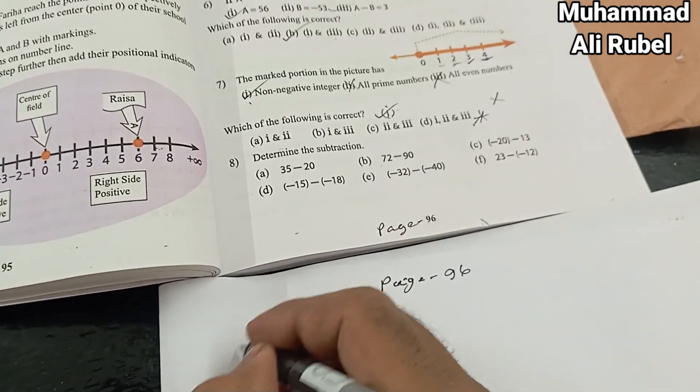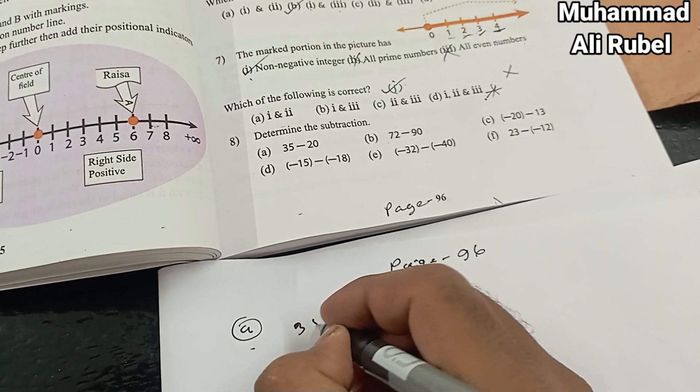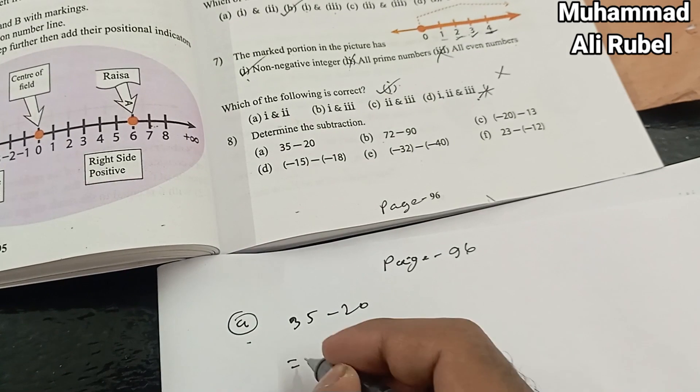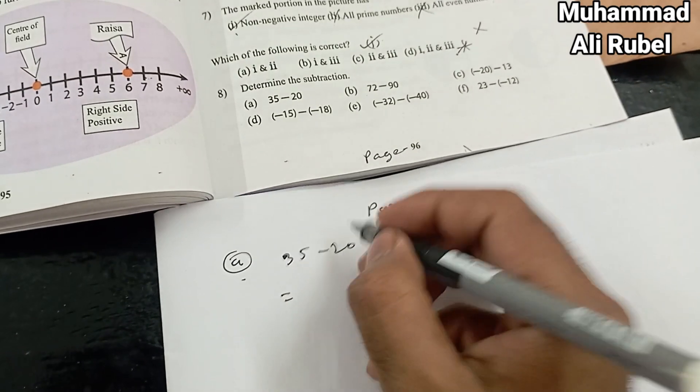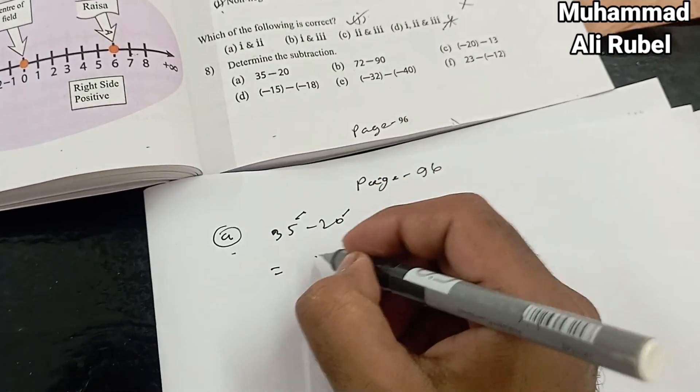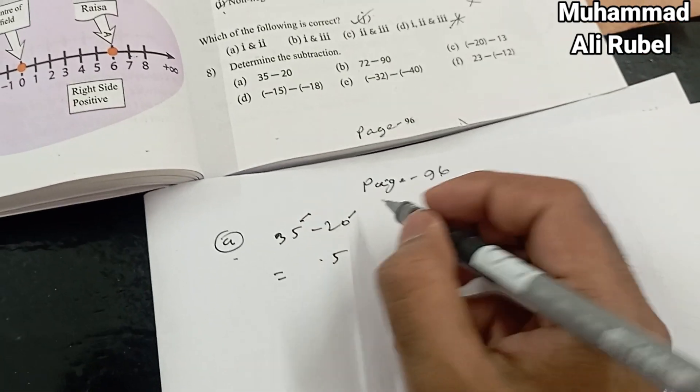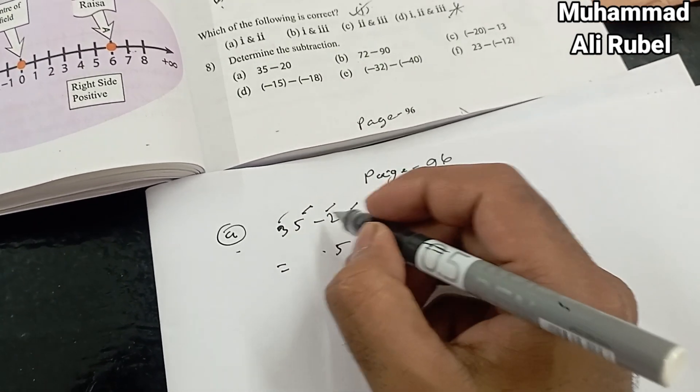Page 96, it's so easy. Problem (a): 35 minus 20. We subtract 5 minus 0 is 5, and then we subtract 3 minus 2.